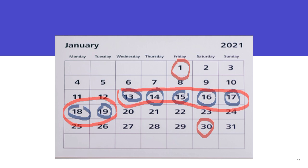Those are the periods that you should have more unprotected sex because it will improve your chances of getting pregnant. This is for a woman with a 30-day cycle.